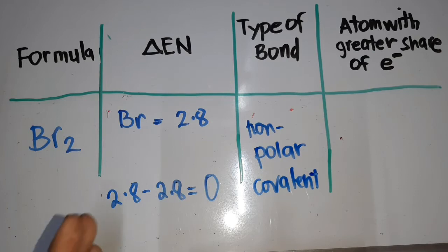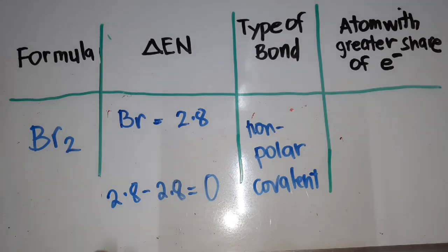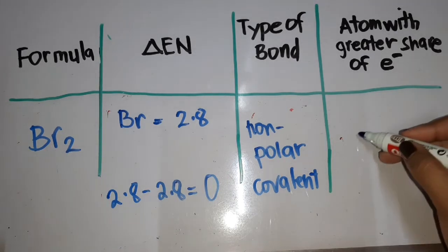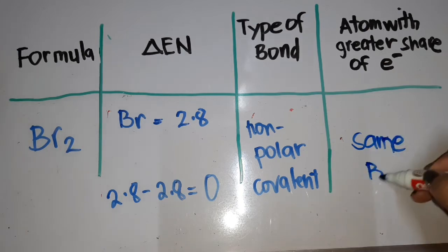What is the atom with the greater share of electrons? We can see that both atoms are the same, so we just write Br — both atoms share equally.